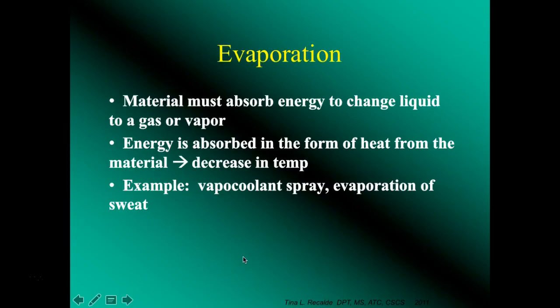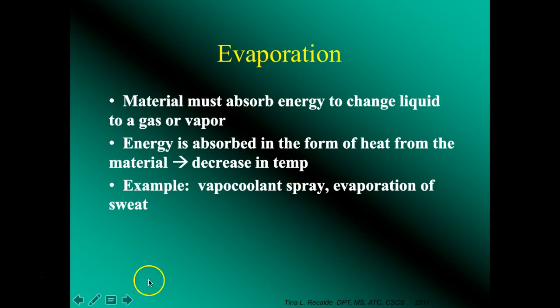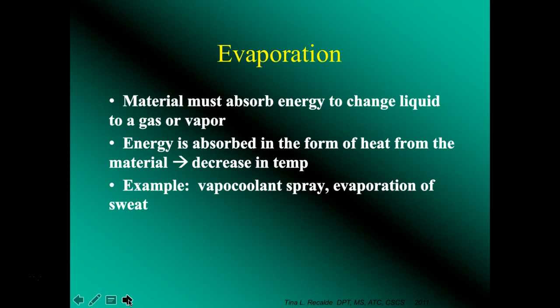Evaporation is where energy is absorbed to change liquid to a gas or vapor. Energy is absorbed in the form of heat from the material, causing a decrease in temperature. An example we used to use is vapor coolant spray, which contained a fluorocarbon — though I believe that has been removed and it can be used again, though I haven't seen it frequently in clinics. A natural example is the evaporation of sweat. Vapor coolant spray was notably used to decrease trigger points; Janet Travell did a lot of work on injecting trigger points, and clinicians without injection privileges used the spray as a semi-effective way to help loosen those trigger points.